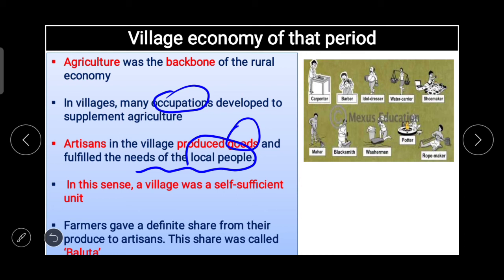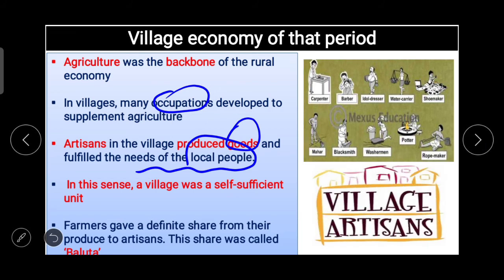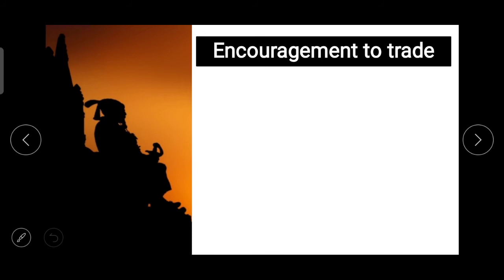The farmers gave a definite share from their produce to artisans, and this share was called baluta. Currency-based payment was not the system — instead, the baluta system specified what share was to be given for which service. For example, rather than going to a shop to buy shoes as we do today, under the baluta system a farmer would get shoes from the shoemaker and give a share of produce in return. This was the village economy of that period.